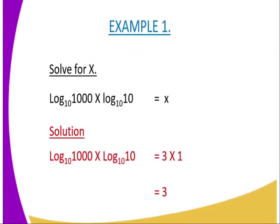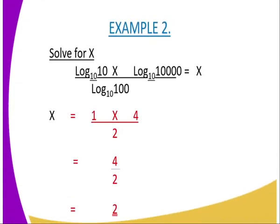In Example 1, we have to solve for x. Log 1000 to base 10 multiplied by log 10 to base 10 is equal to x. Therefore, if you want to solve for x, you write the exact value for the logarithm of 1000 to base 10, which is 3, and multiply it by the exact value of log 10 to base 10, which is 1. Once you multiply 3 by 1, you get the answer as 3.